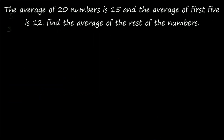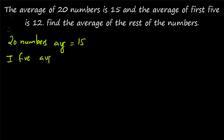Question number 3: the average of 20 numbers is 15 and the average of the first 5 is 12. Find the average of the rest of the numbers. So the average of 20 numbers is equal to 15. The average of the first 5 is also given — it is 12. You have to find out the average of the rest of the 15 numbers. The average of the first 5 numbers and the total average are given.